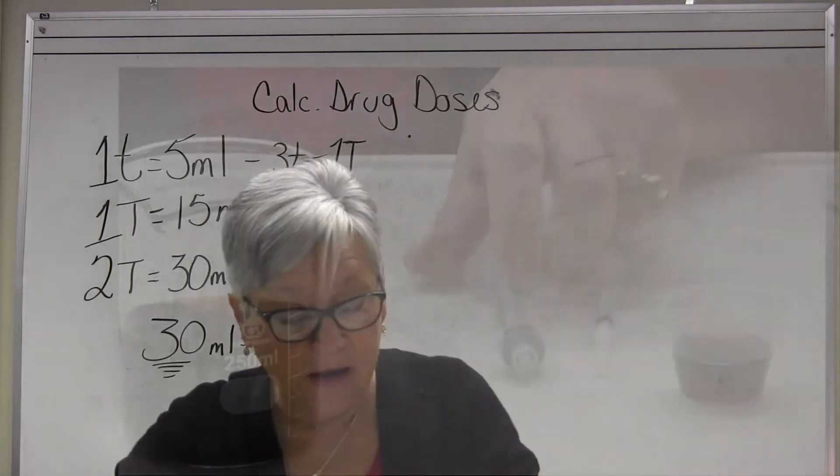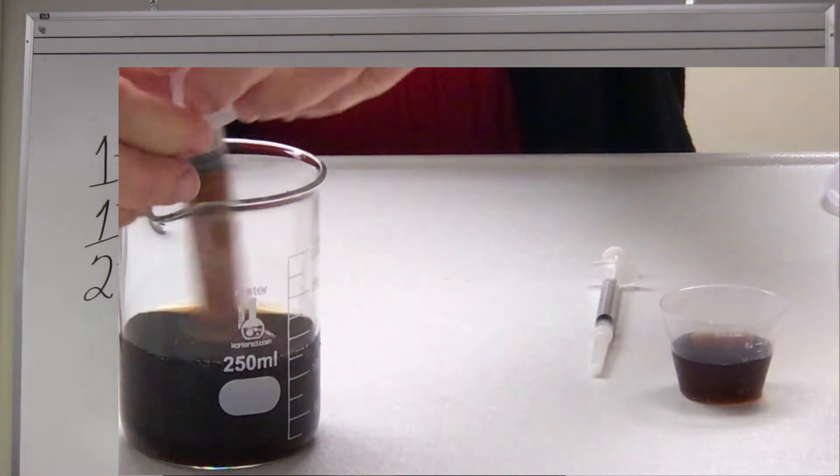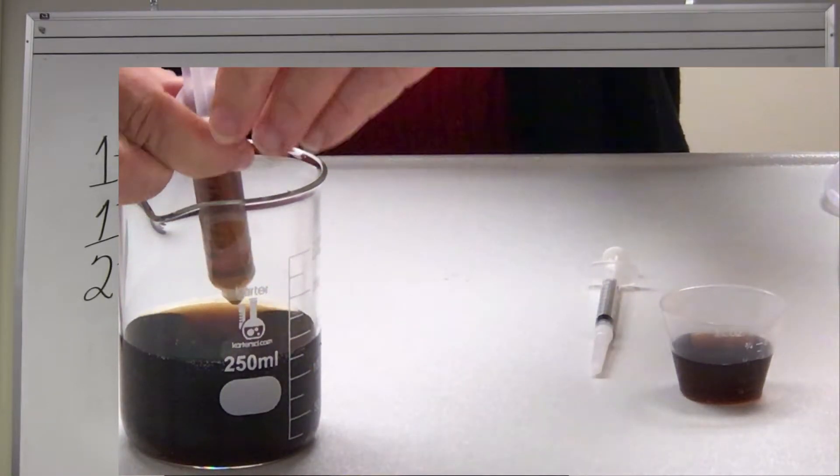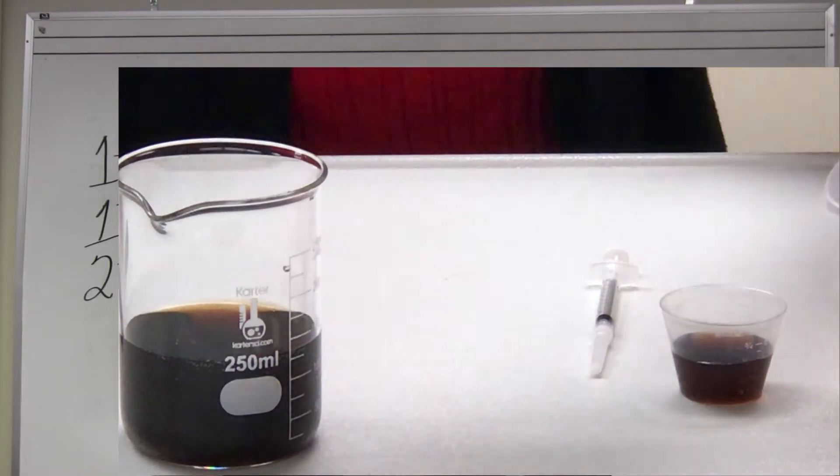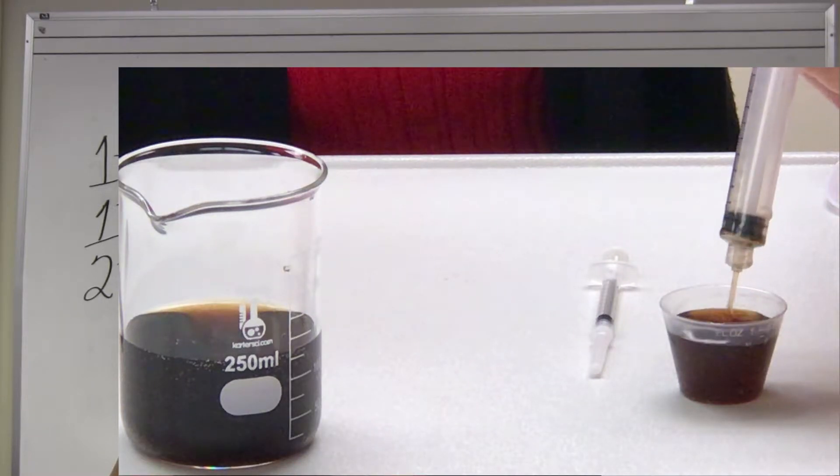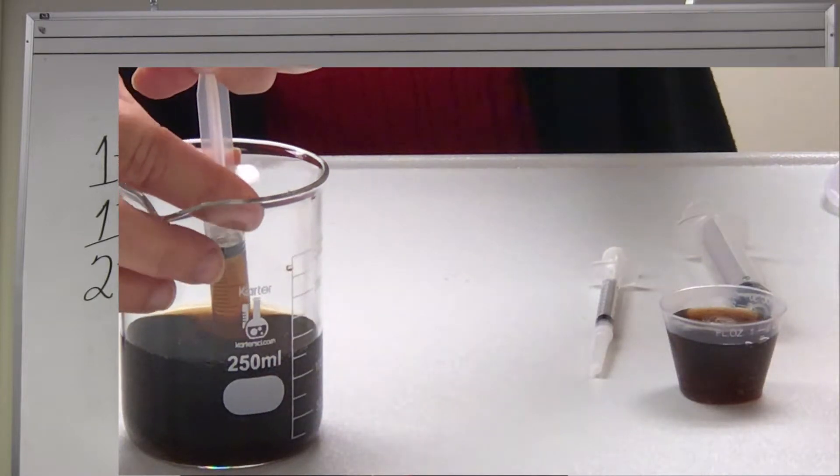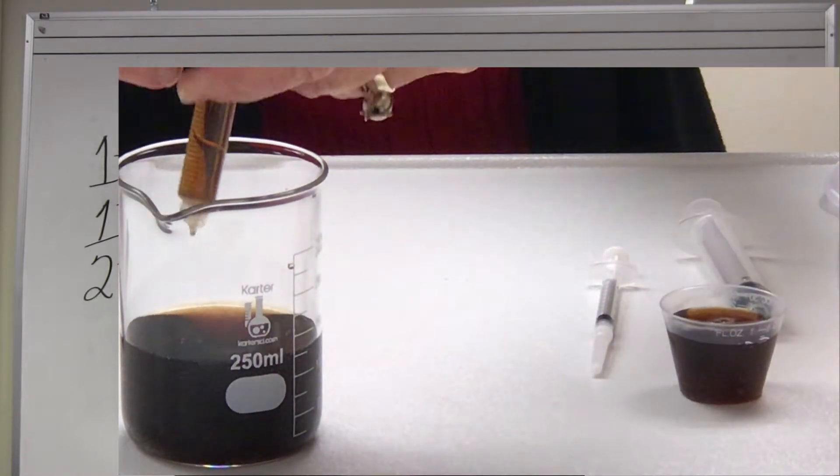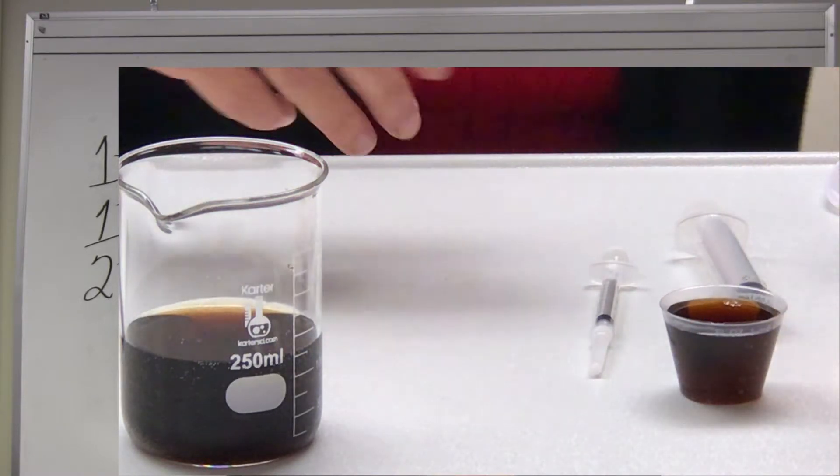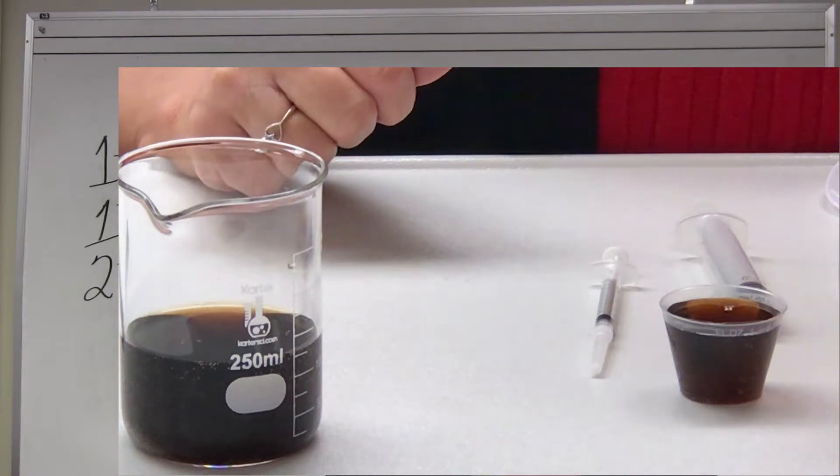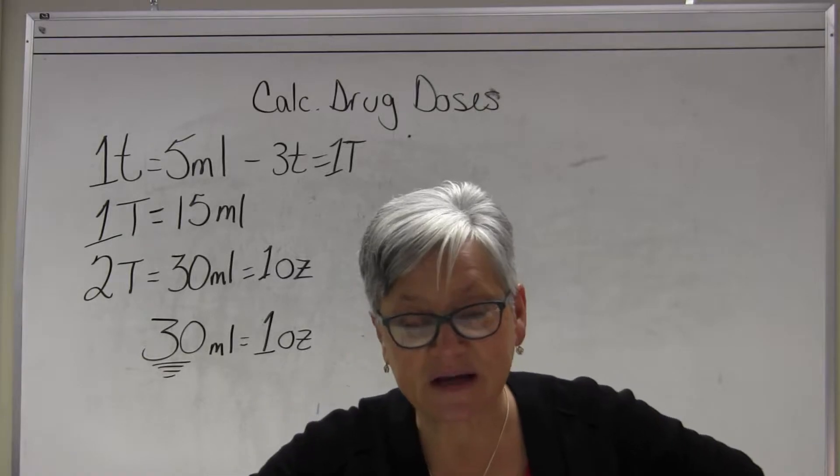That's half an ounce. Now two tablespoons equals 30 milliliters which is one ounce. So if I take three more of these - this is a 10 milliliter, here is a 10 milliliter - so all I have to do is have a 10 and a five to make 15 more, right? And then I would have... looky there, that's 30 milliliters. It's also one ounce.